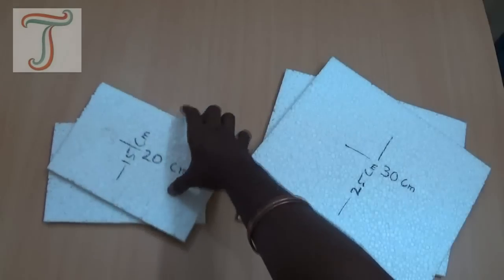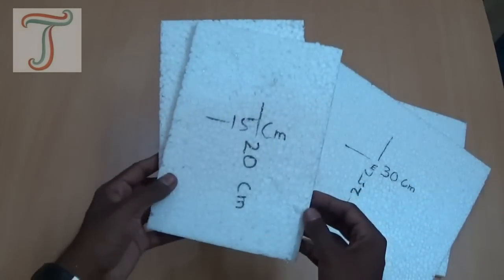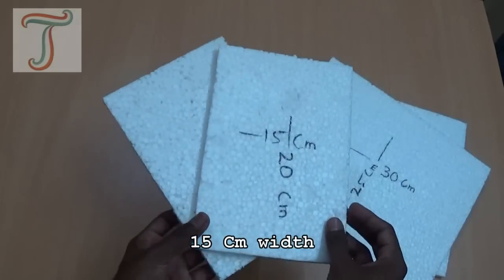Then cut two pieces in these measurements. These are the side walls of our house.